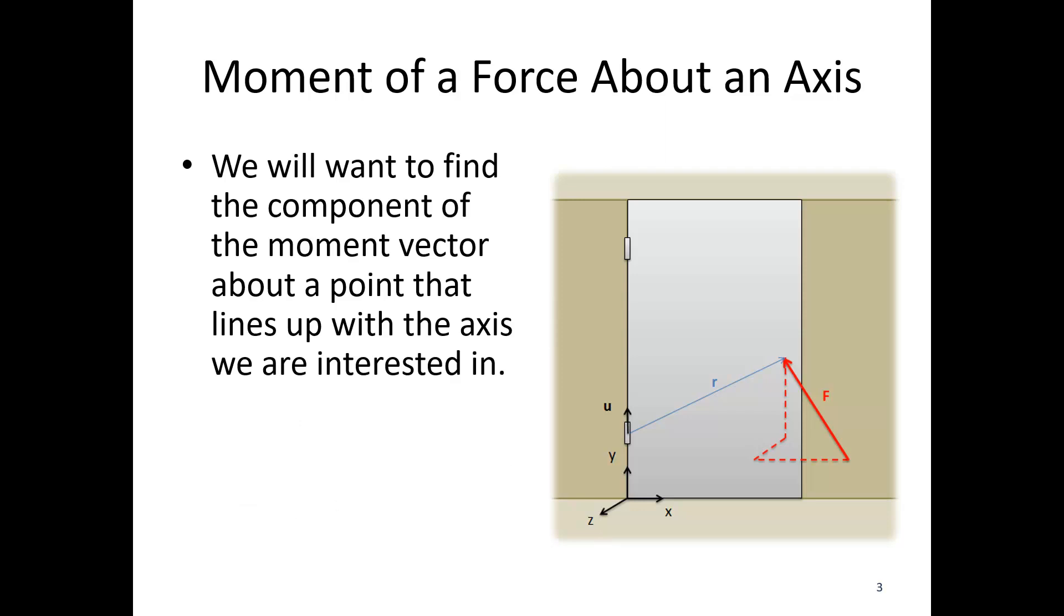So we'll want to find the component that lines up with a specific axis. This axis we're interested in, we can use the dot product, which is a vector operation, to find the part of the moment about a specific axis.